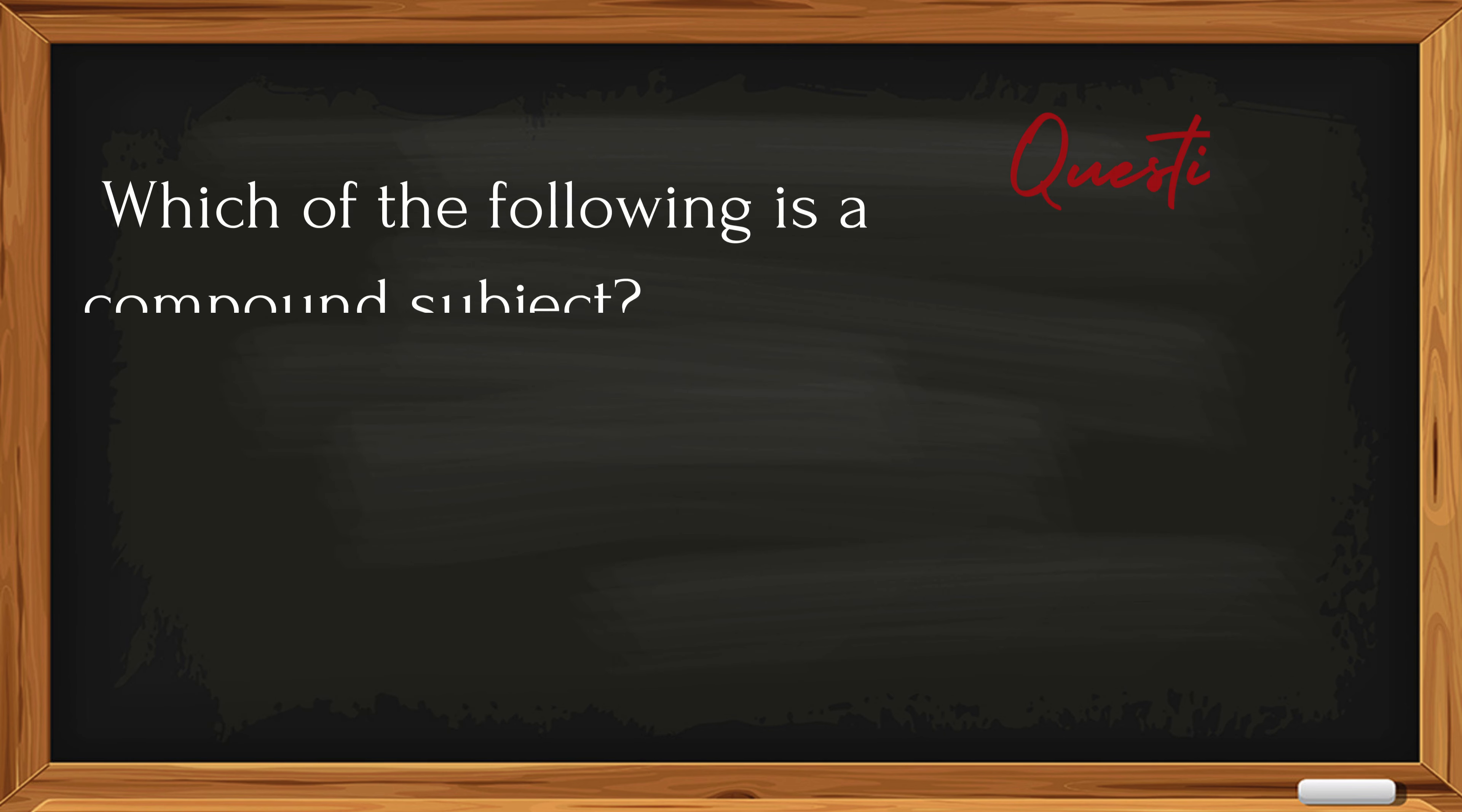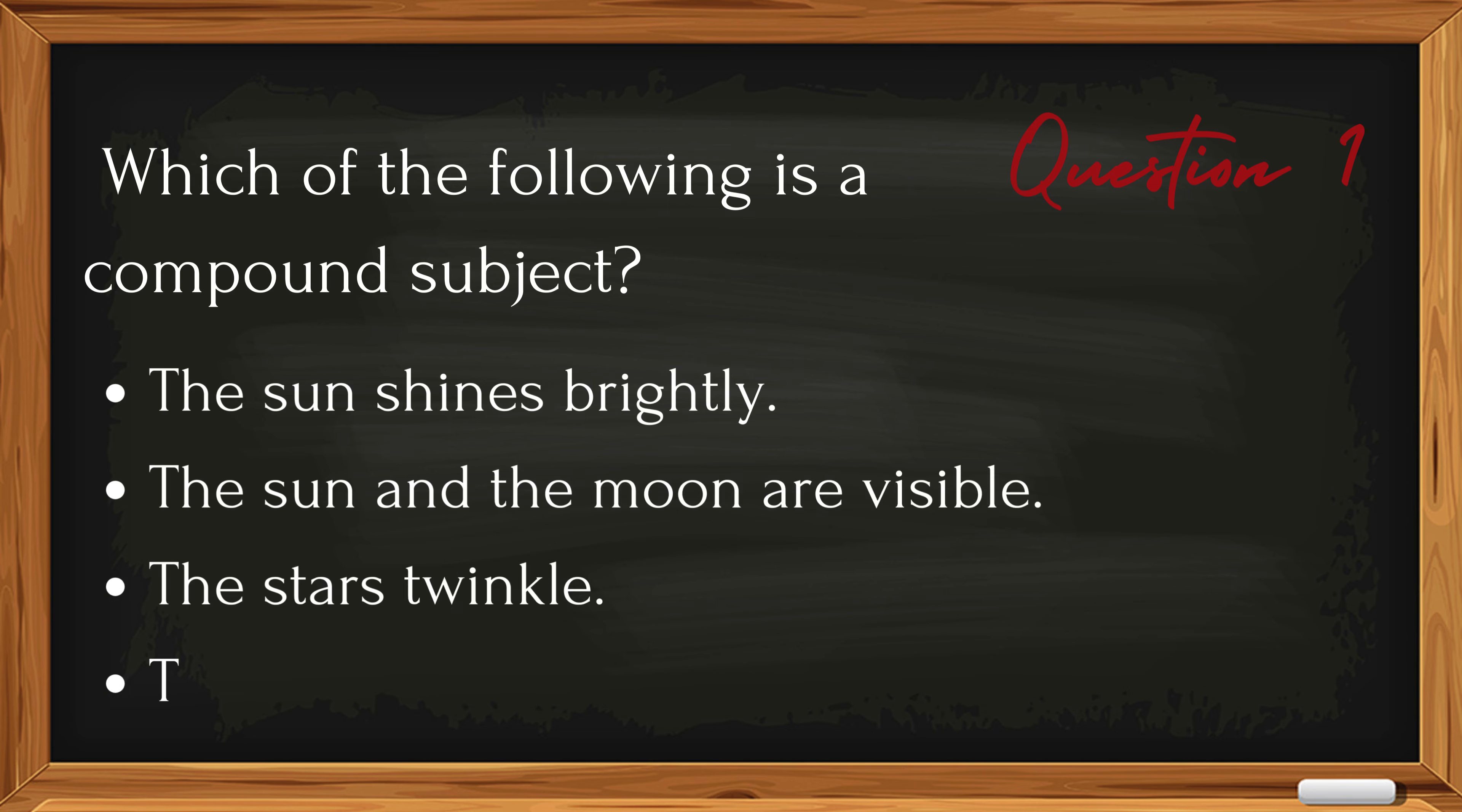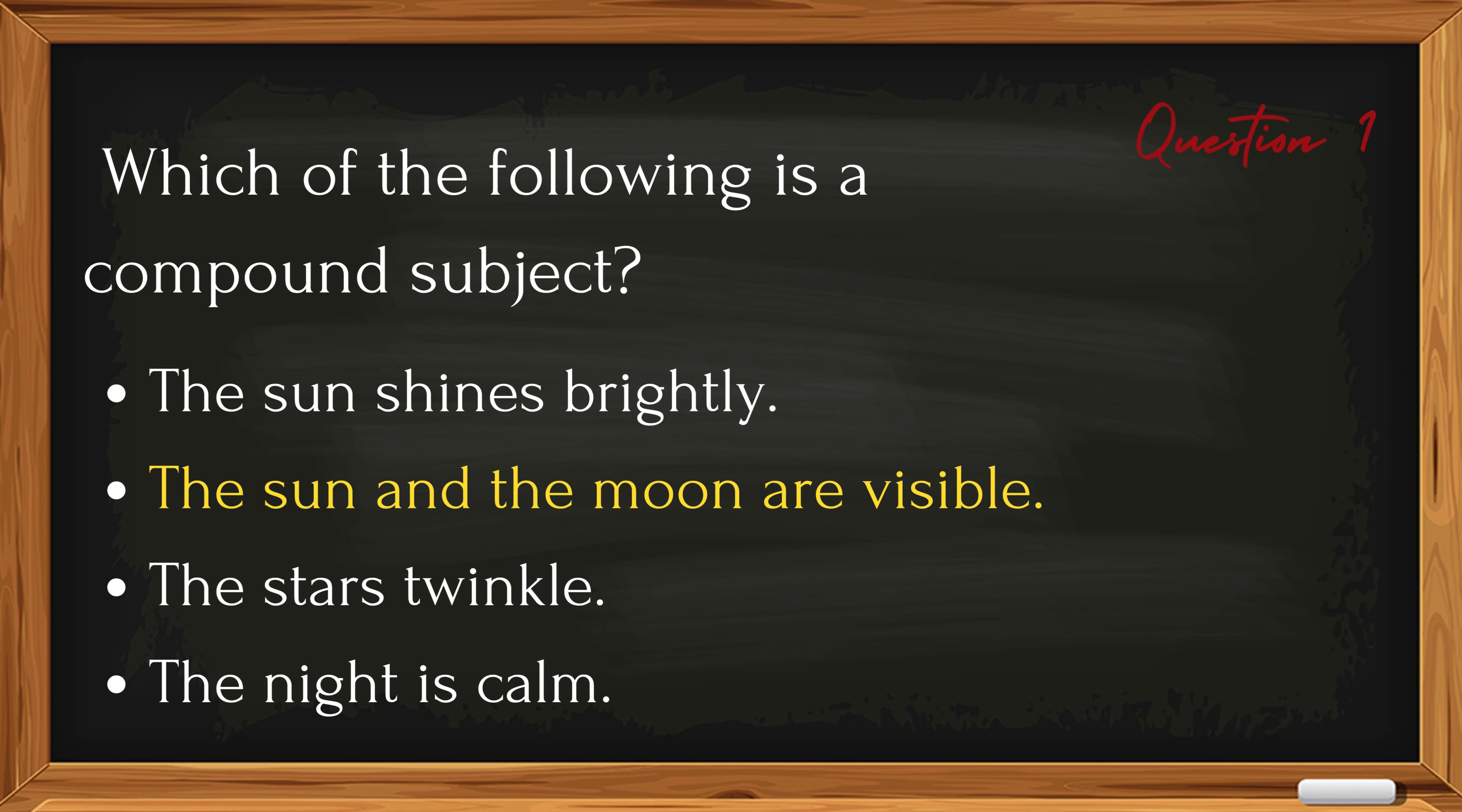It's quiz time. Which of the following sentences contains a compound subject? The sun shines brightly. The sun and the moon are visible. The stars twinkle. The night is calm. Answer. The sun and the moon are visible.